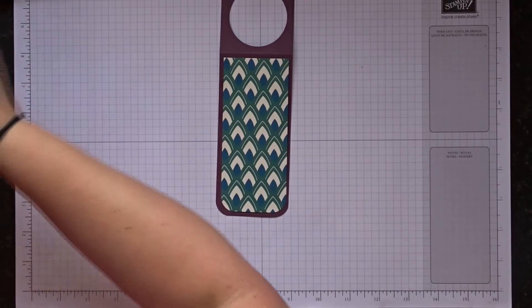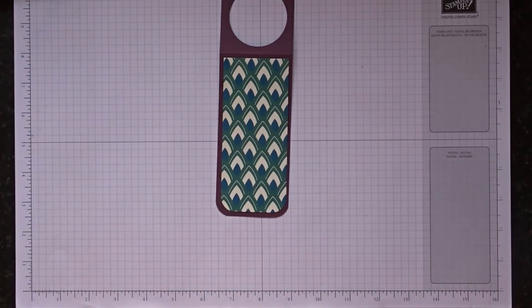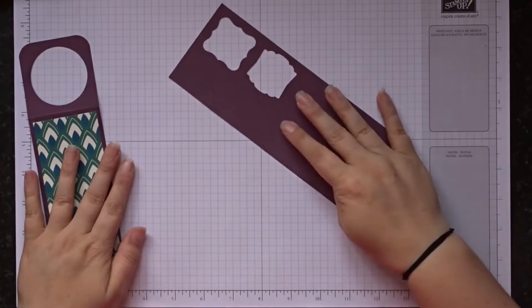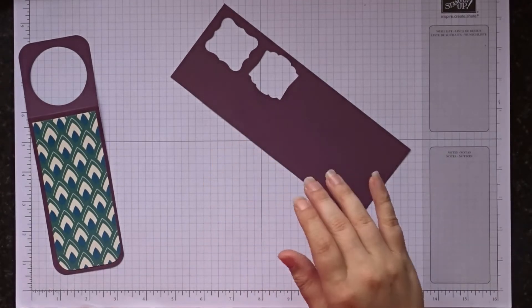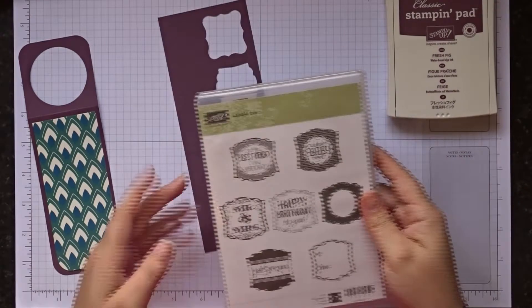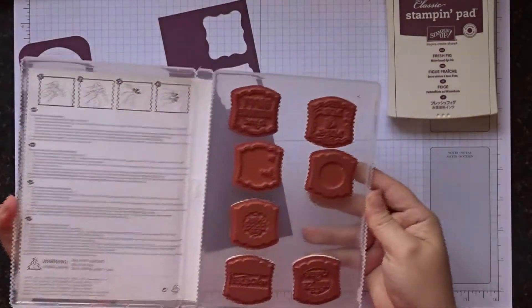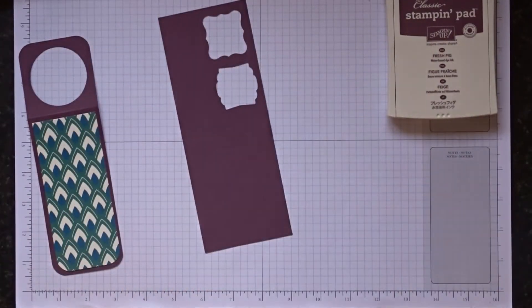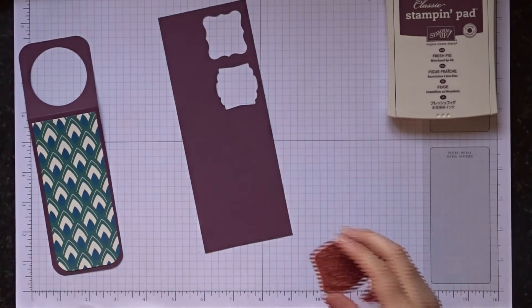So I've got a bit of leftover fresh fig and then we're going to do some color cut on color stamping. So I've got my fresh fig ink and I have the Label Love stamp set and I'm going to use the Happy Birthday as this is for a birthday present.